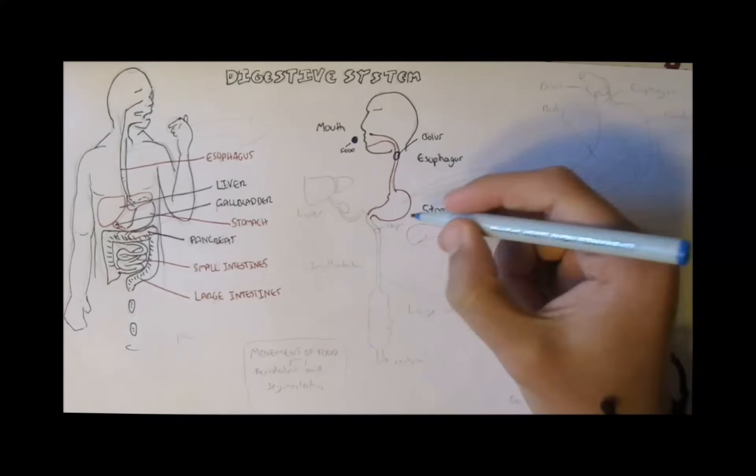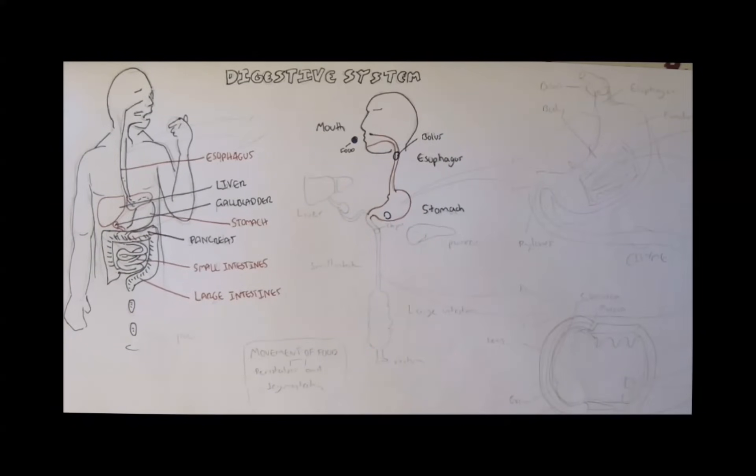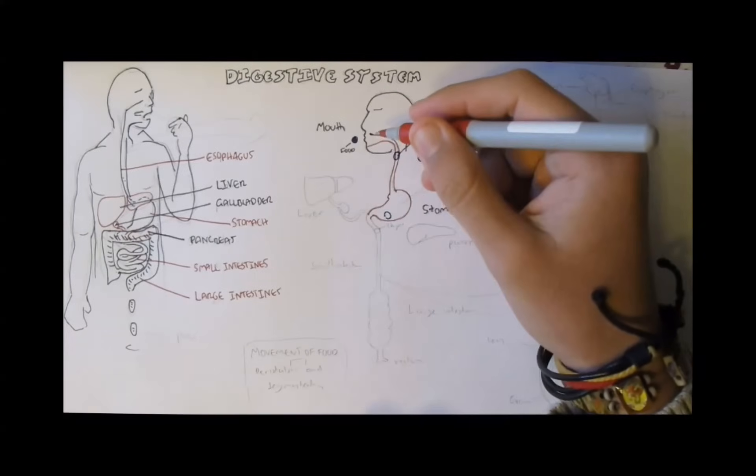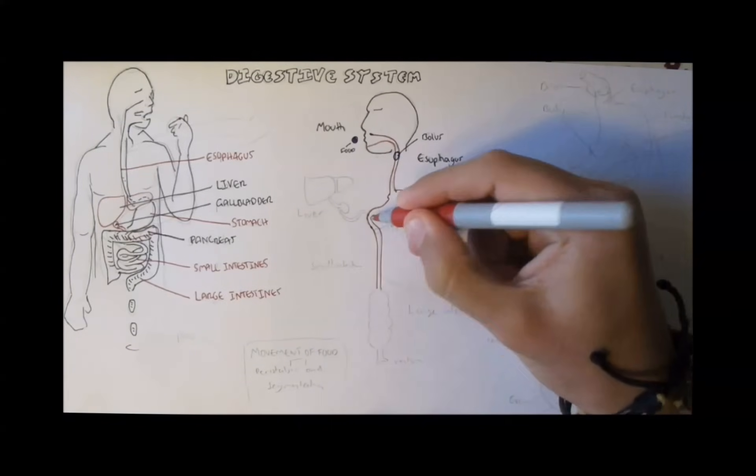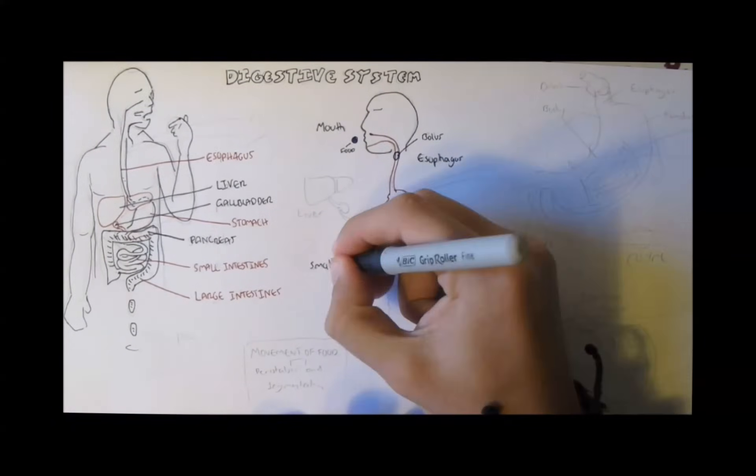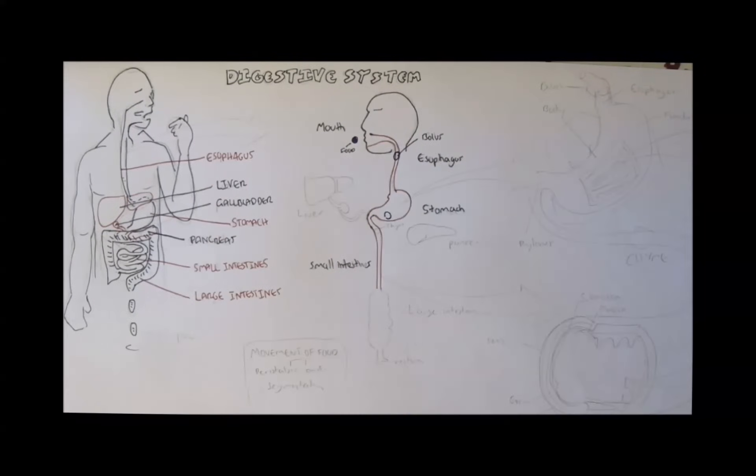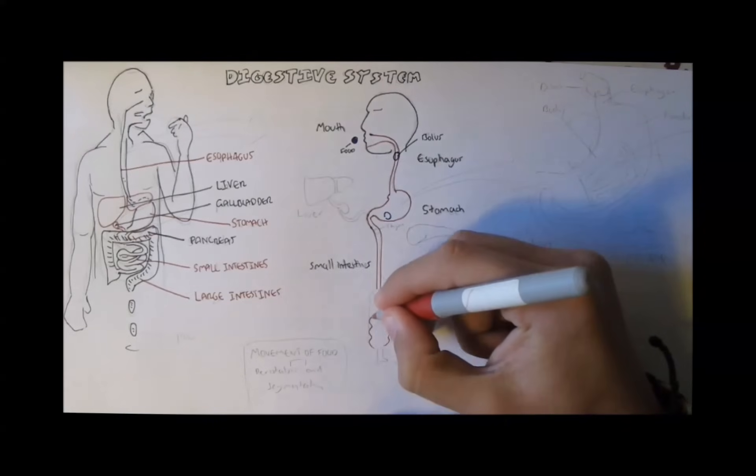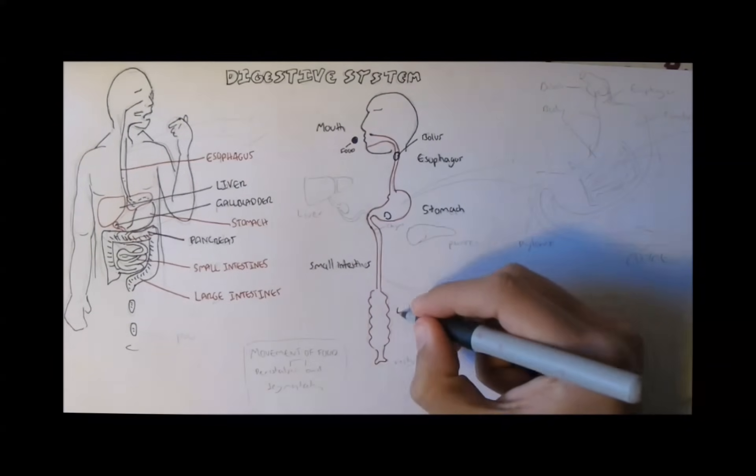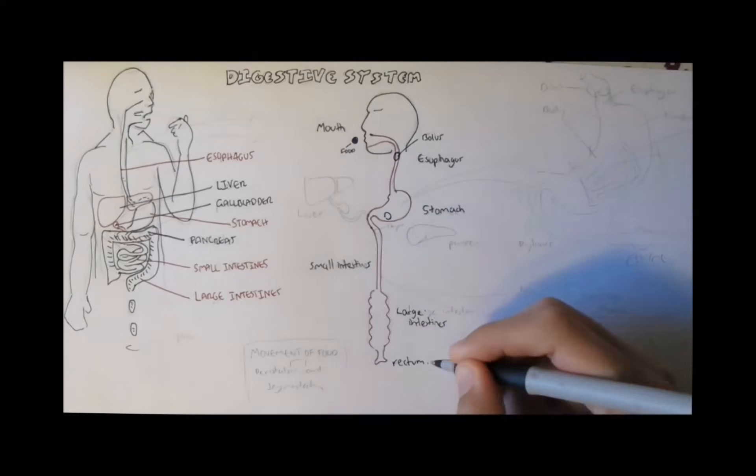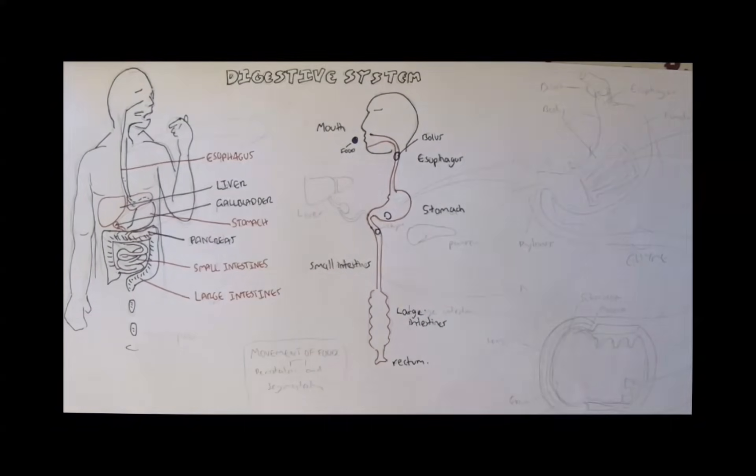Now the bolus will travel then down towards the stomach. And the stomach will mix and secrete hydrochloric acid to digest some of the food. This food will become mushy now and continue traveling towards the small intestine, the main site for absorbing food. And then the mushy food will travel towards the large intestines and finally to the rectum. Now the mushy food is referred to as chyme once it leaves the stomach.